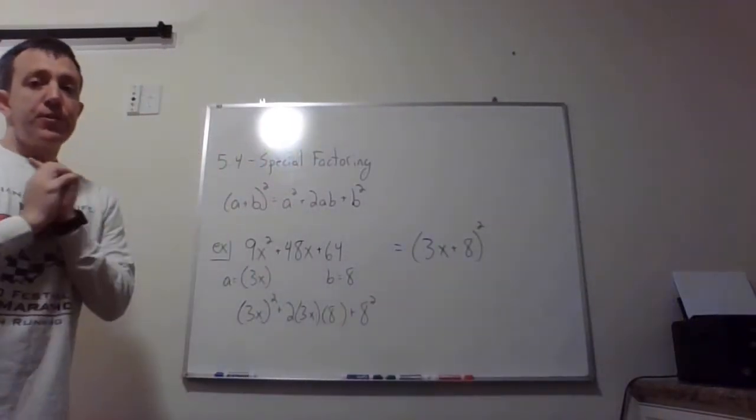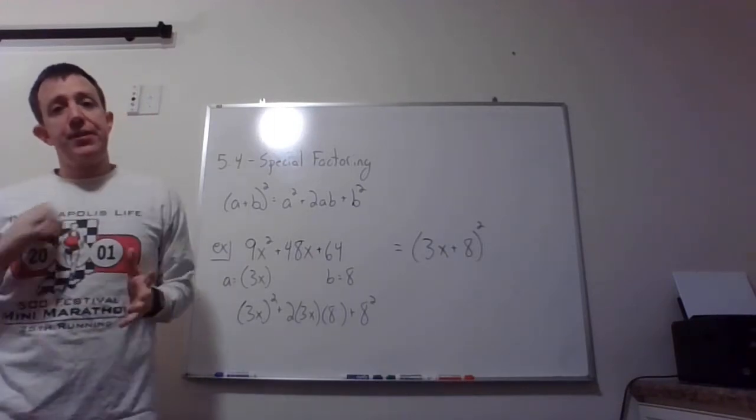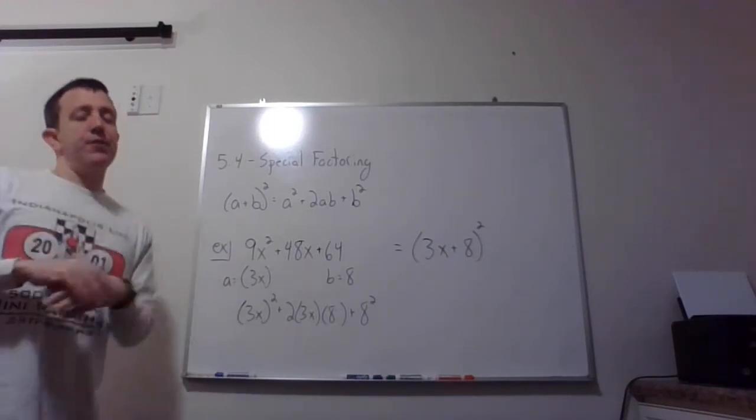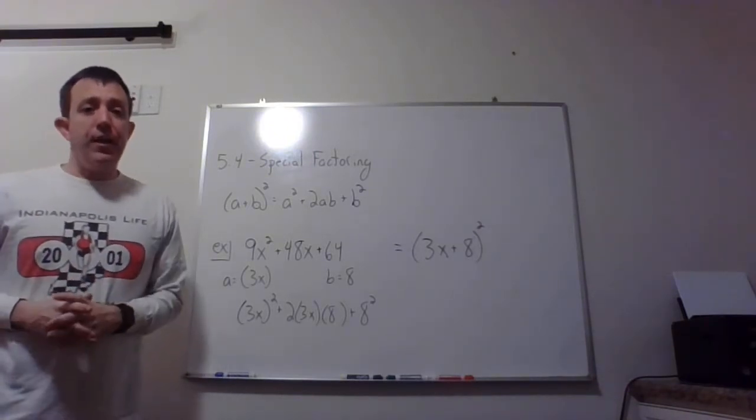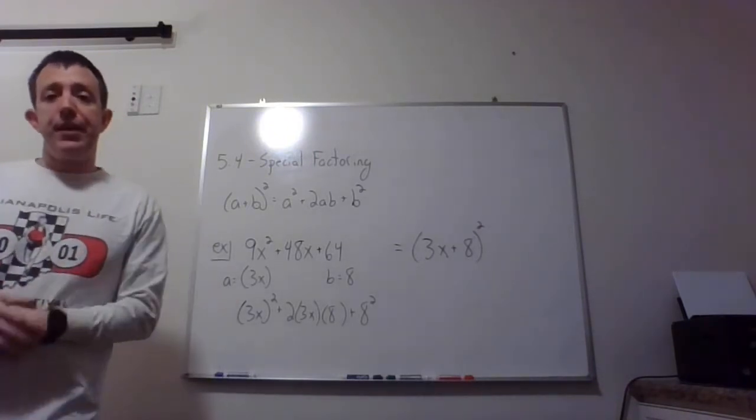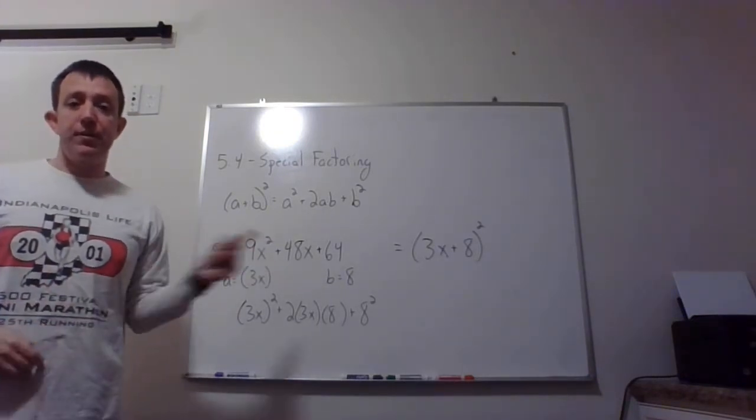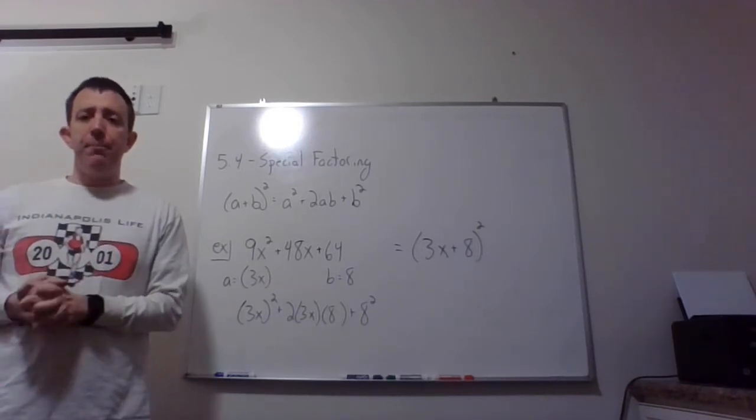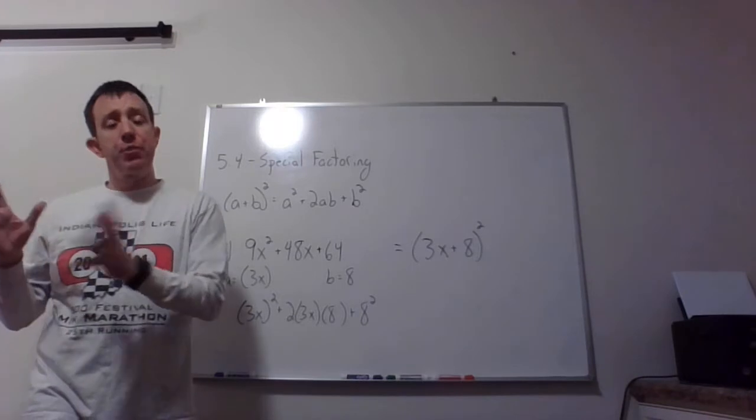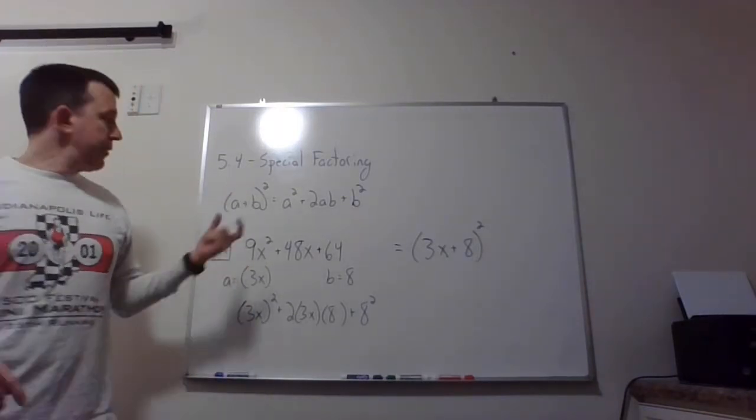Okay, section 5.4 special factoring. So basically this section is referring us back to chapter 4 when we had the special products. We're going to look at three different kinds of special factoring here. I'm going to go through them one at a time. You can see I already have one example up that I'm going to do. Here's our first one. In chapter four we learned that if you have a binomial and you square it, it fits this pattern when you multiply it out, right?